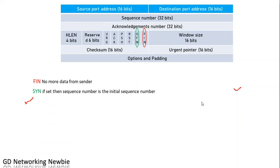The SYN field is there to synchronize the initial sequence. In the three-way handshake, we send some initial sequence number to the server machine to indicate that we want to transmit some data. At that time, we set this SYN flag and send the sequence number.